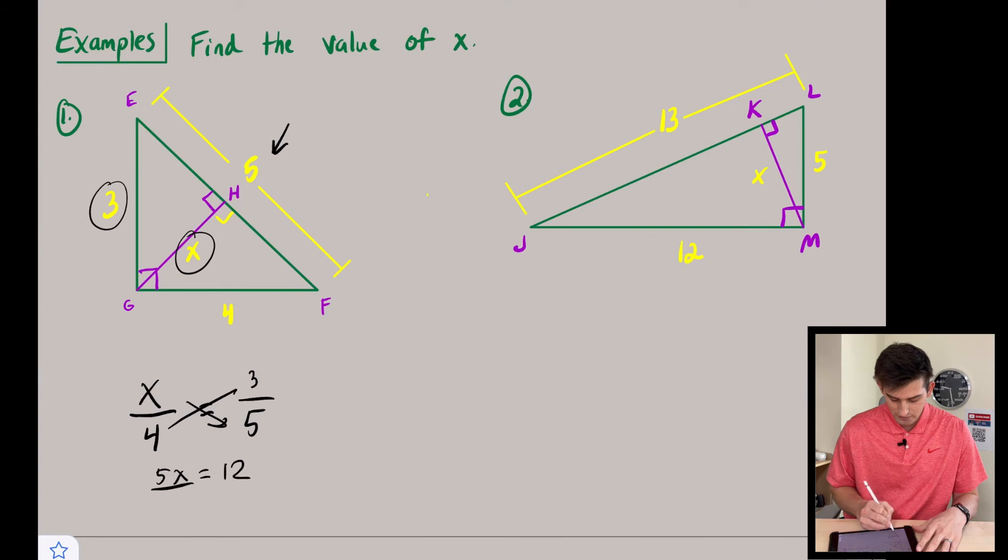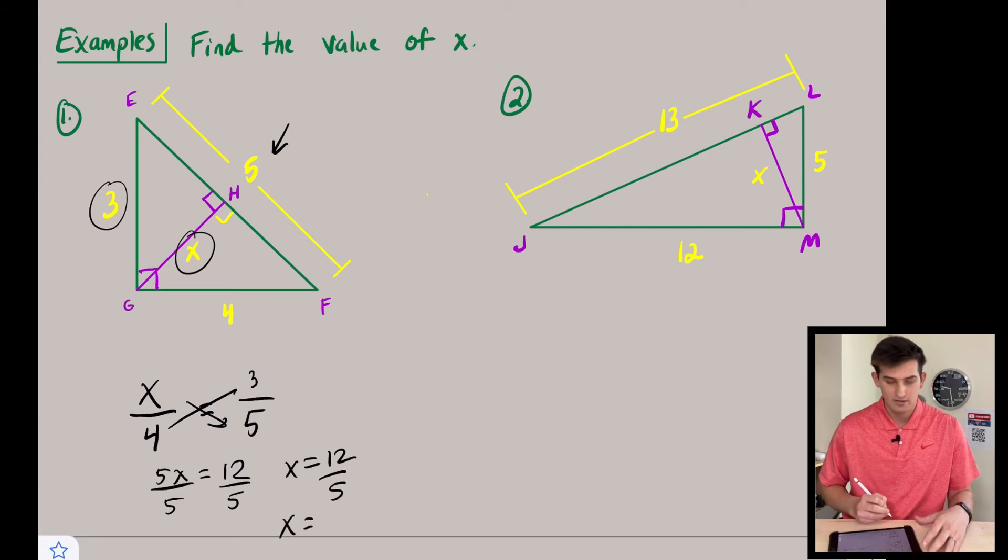We divide by five and we get x is equal to 12 over 5. And we could write that as a decimal. So 10 divides into five two times and we have two left over, and two fifths would be 0.4. So we're going to say x is equal to 2.4 right there.